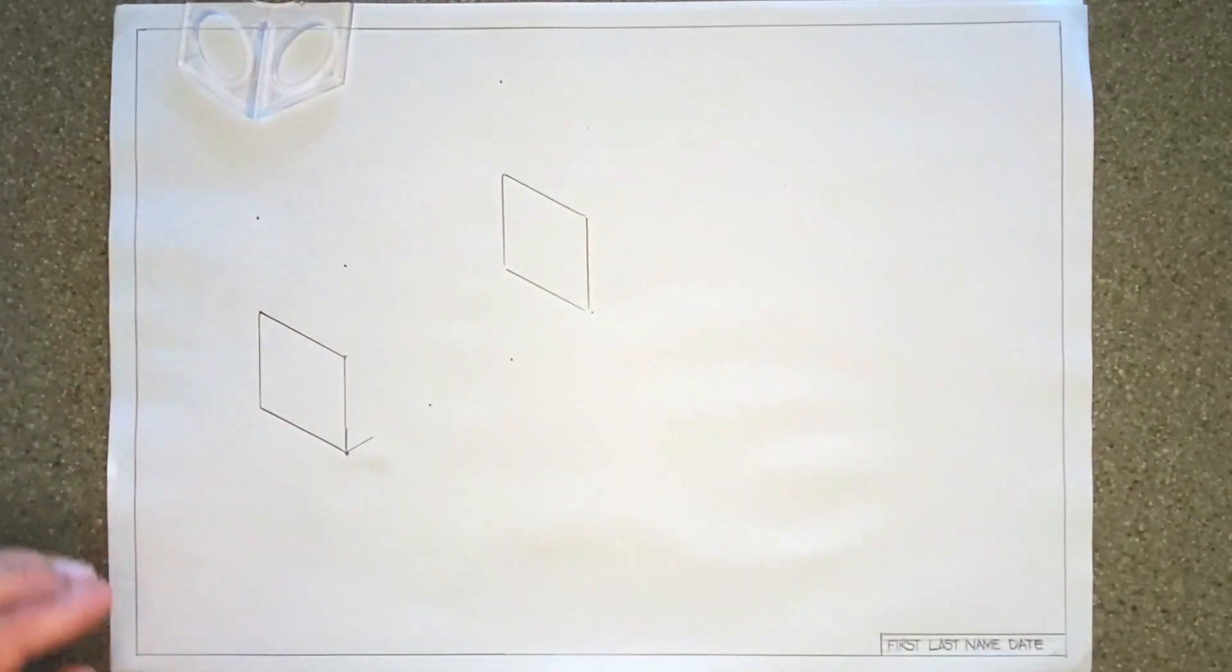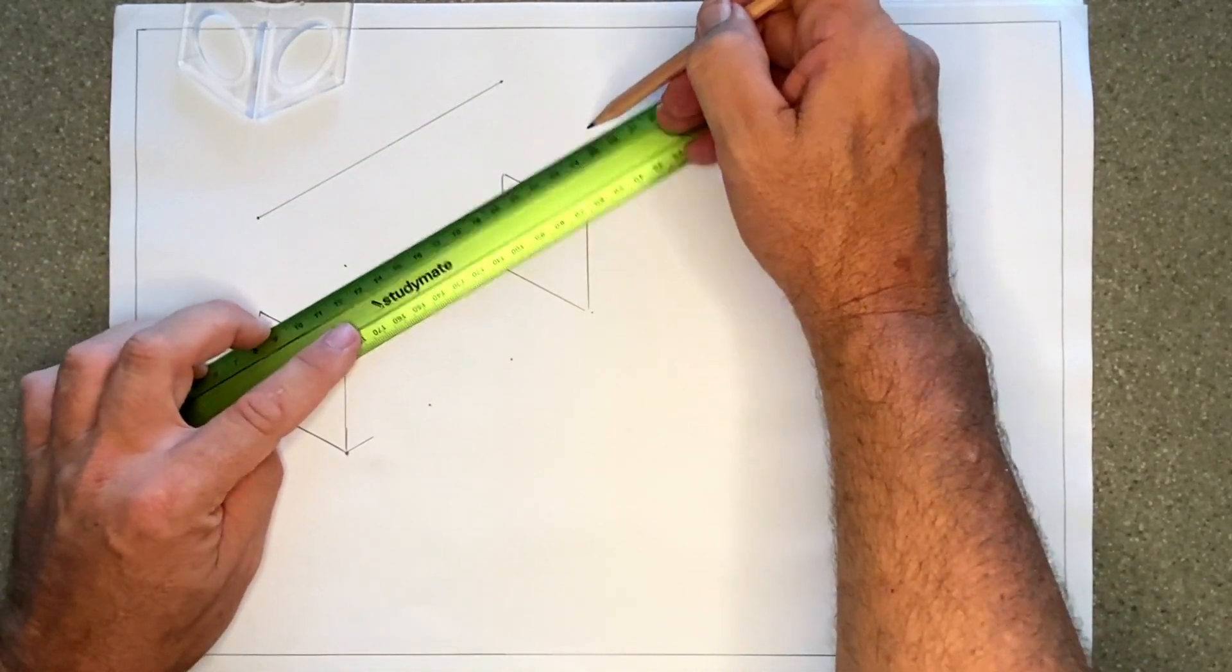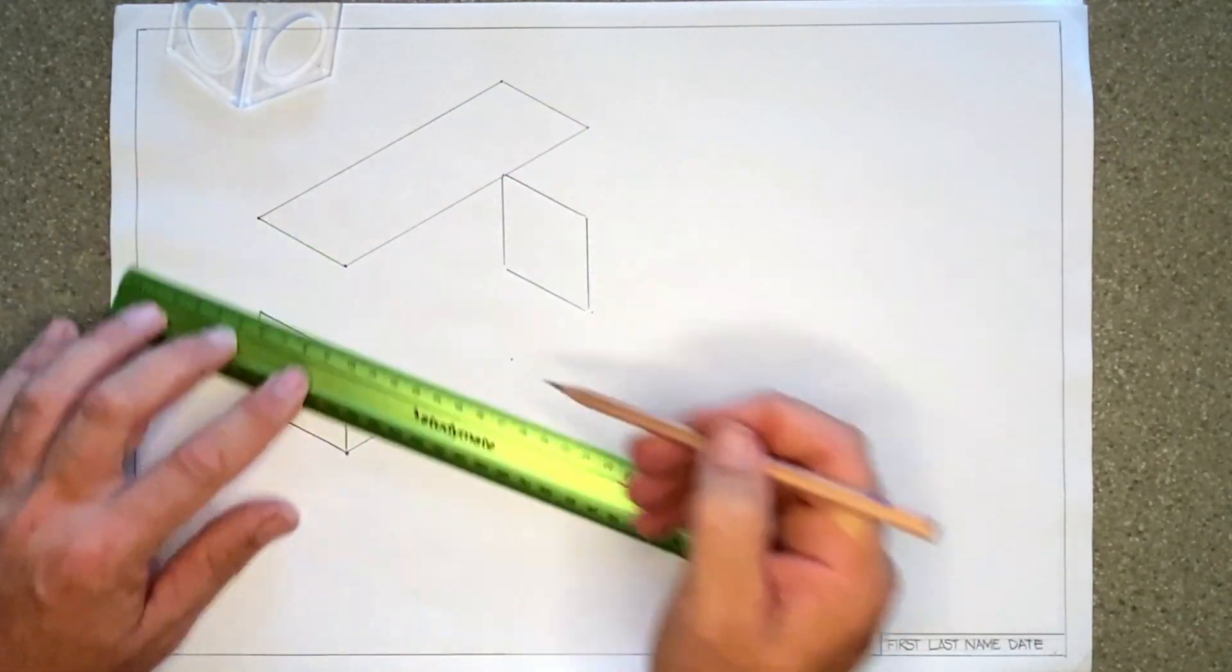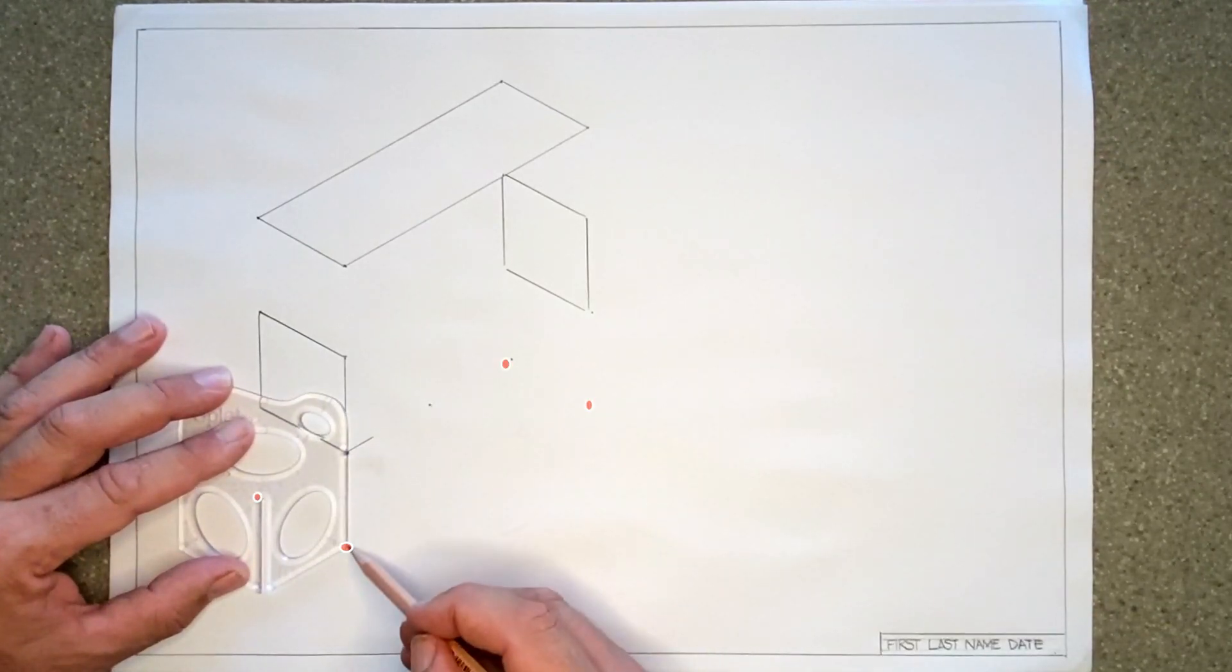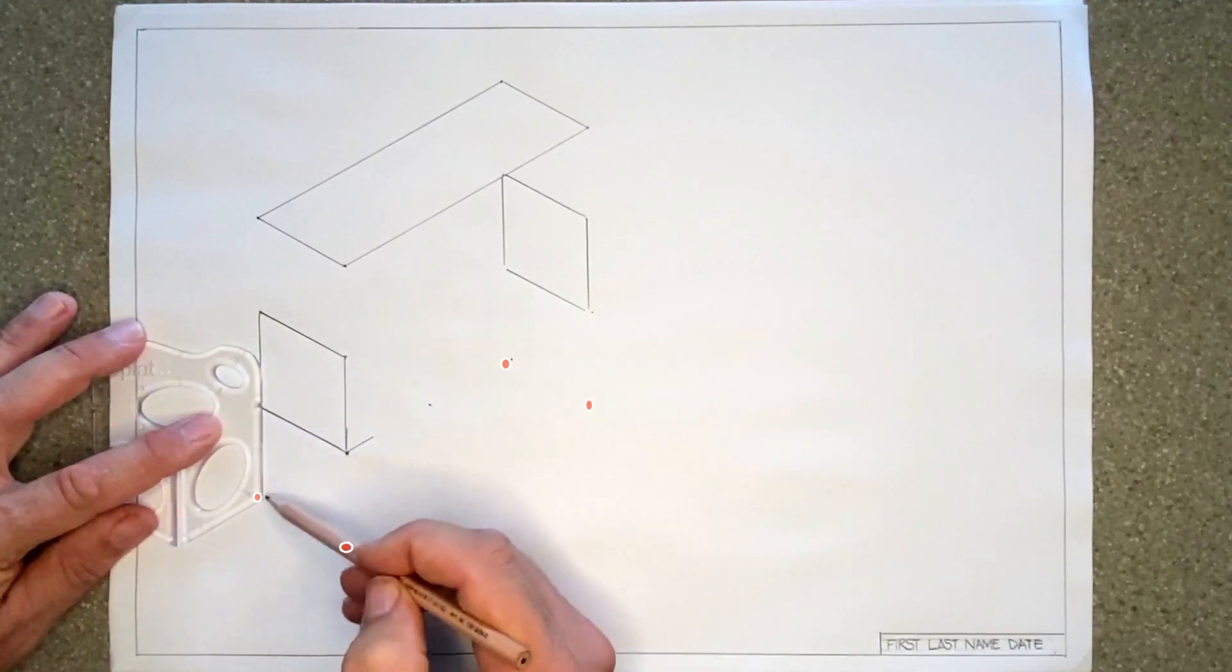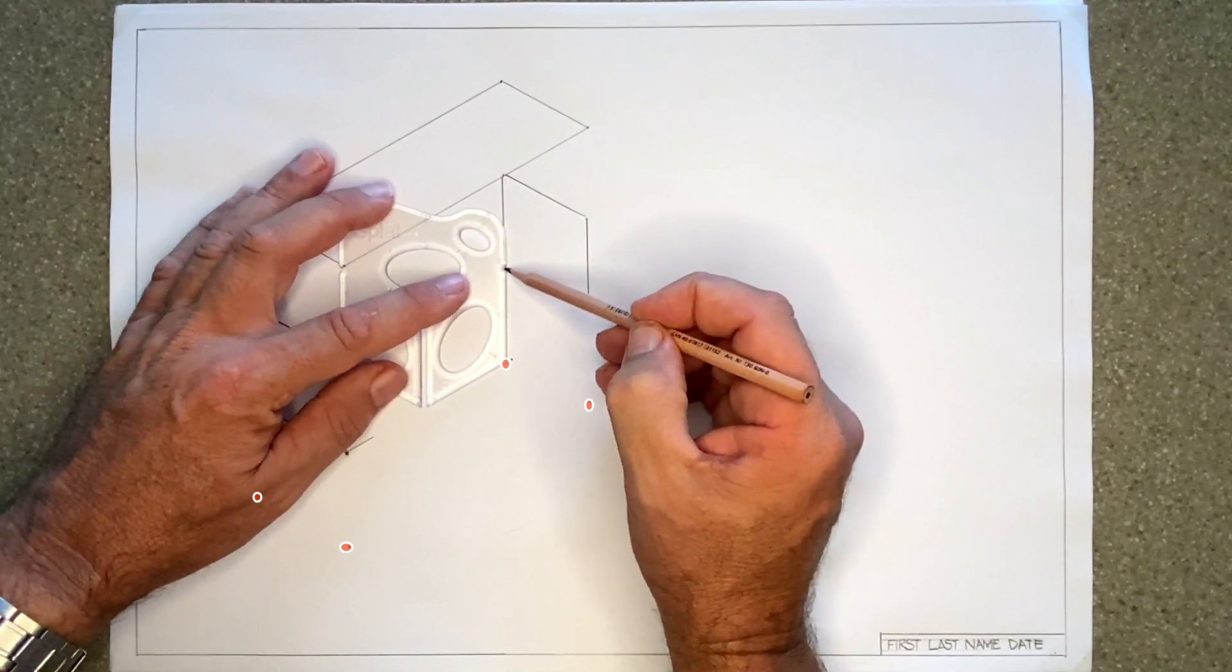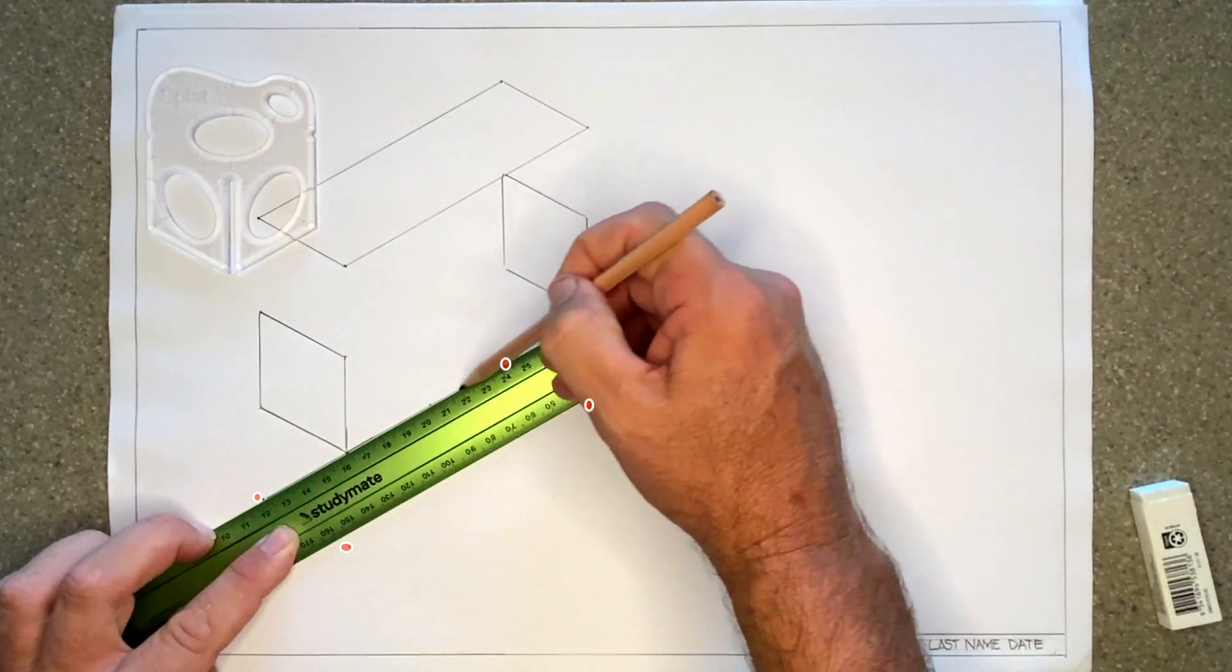So those four points, I'm going to use a ruler and connect them. So I'm carefully joining the dots. Those are my isometric lines. Great. Now I'm going to come down one splat length from each of those four places. This time I'm going from the blip down to the corner of the splat.